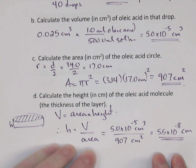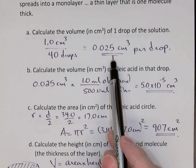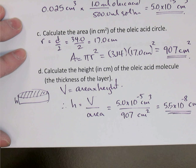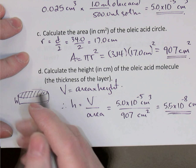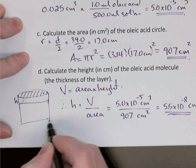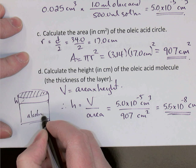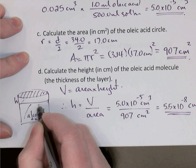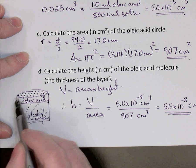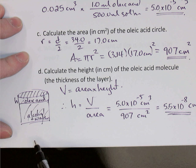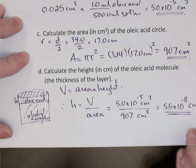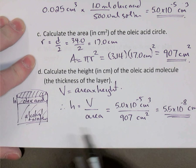You might be wondering why we use the volume of oleic acid and not the volume of the drop. The solution applied to the water was made of oleic acid with alcohol. The alcohol, which made up 499 milliliters of the solution, goes into the water. So the oleic acid is sitting on top of the water. The alcohol, which was the solvent, dissolves into the water. The oleic acid is not soluble in water, so it forms a layer like oil on water. The volume we use is the volume of the oleic acid, not the volume of the solution.